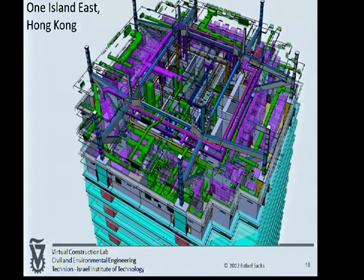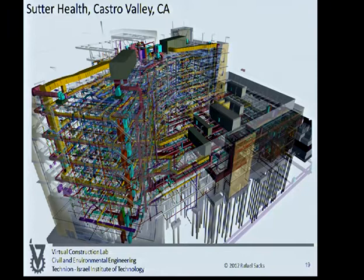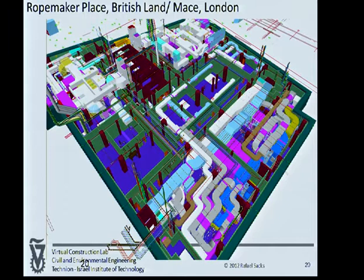What we have nowadays is much more complex buildings. This is one of the service floors of an 80-story tower in Hong Kong — I won't dwell on it, but the visual image is striking. The same goes for a hospital in Castro Valley, California, where they're replacing almost the entire stock of hospitals. The number of systems and complexity of coordination between them has become far more intense than at the time of the Empire State Building. This is a building we worked with in 2008 and 2009 in London, where three stories were filled with machine rooms and equipment, all coordinated with building modeling. None of these buildings could really have been built efficiently without clash checking and other BIM facilities.